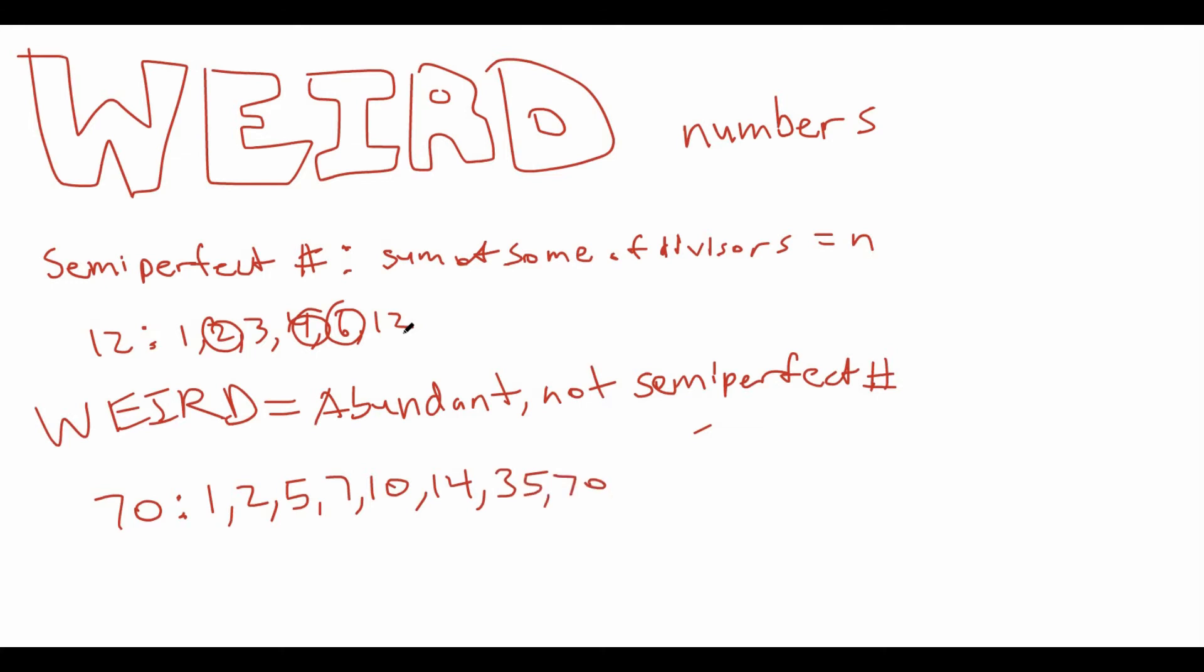So, you can check that this is abundant, because we can see that all these sum to greater than 140, clearly.